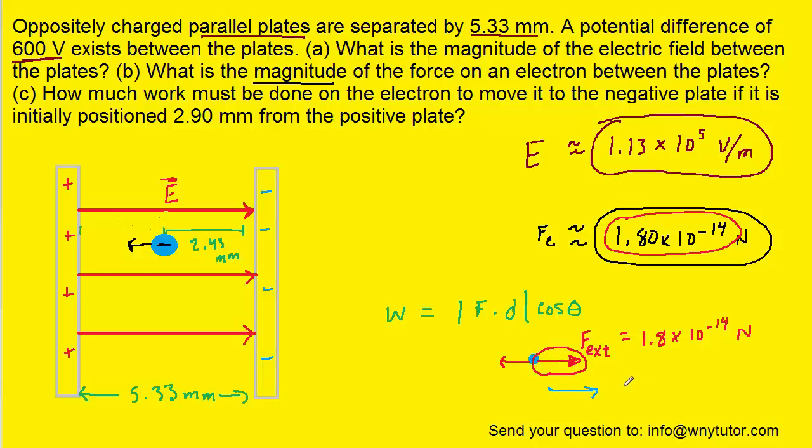Now, since we're pushing it to the right, you'll notice that the angle between that external force and this displacement would be zero degrees. So when we plug into the work equation, we're going to plug in zero degrees for θ. We're now ready to plug in the force. The distance it's traveling is 2.43 millimeters. We have to make sure to multiply that by 10^-3 to get it into meters, and then the angle is zero.